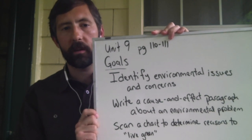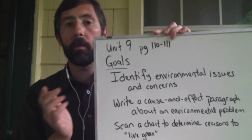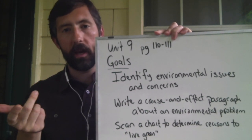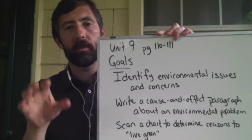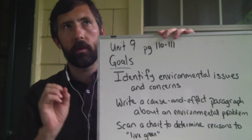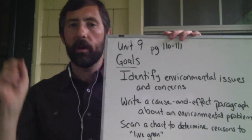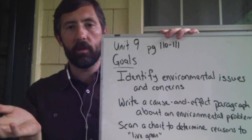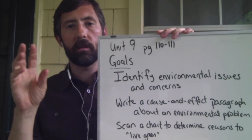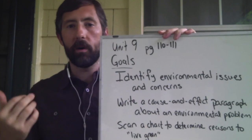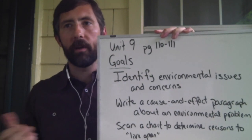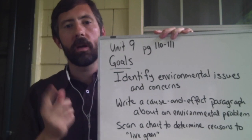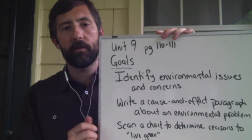We're also going to write a cause and effect paragraph about an environmental problem. If you remember, cause is the reason why something happens, and the effect is the result — what happens because of an action. If I throw the ball at the window, that's the cause. The effect is the ball breaking the window. If I pour vinegar and baking soda together, that's the cause; the effect is a bubbling action. So we're going to look at a cause and effect paragraph about environmental problems.